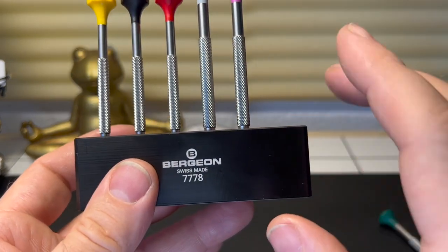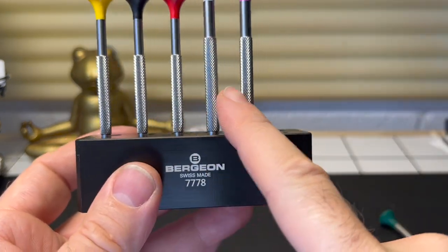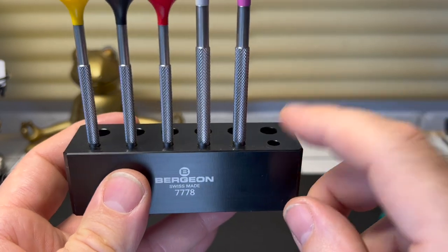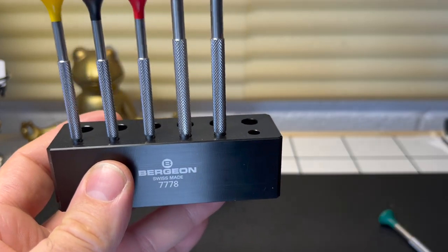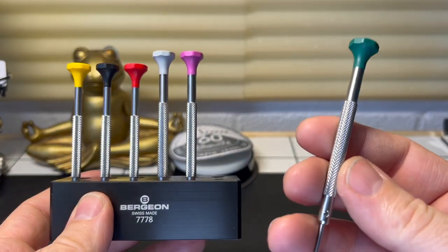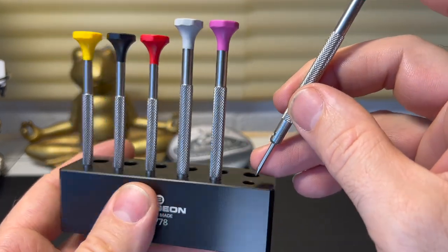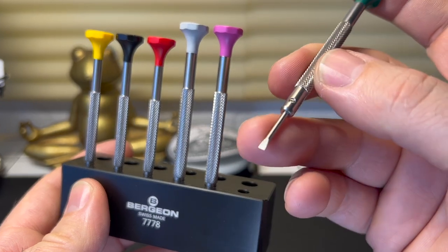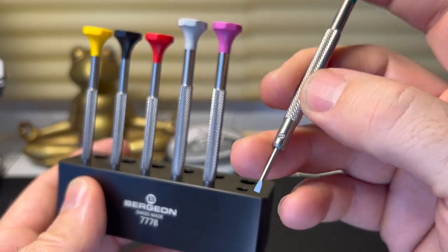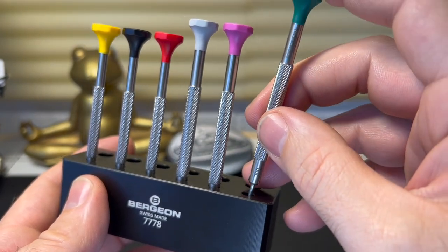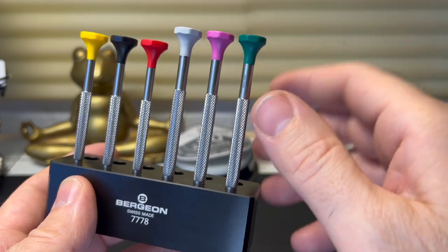Now I sometimes think they've done this on purpose, but the pack only comes with five screwdrivers and you have a sixth hole here. So you can't help but buy the next screwdriver. But to be fair, you need this. If you're going to be doing any serious tinkering around with watch movements, you need the two millimeter here on the ratchet wheel, crown wheel, whatever. You want that larger screwdriver.